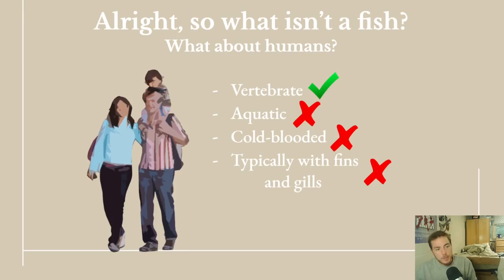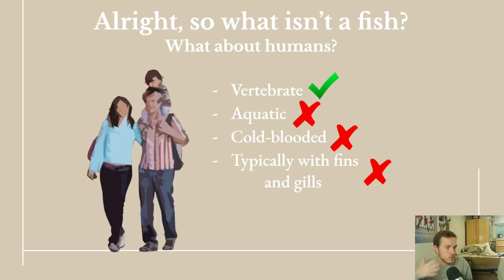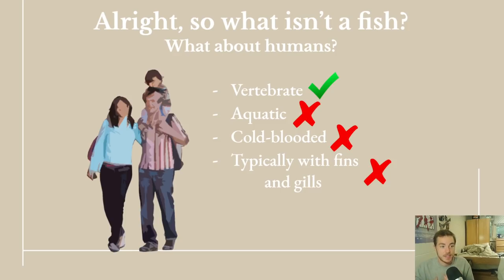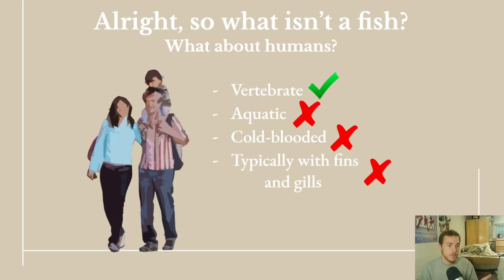Now let's talk about what isn't a fish, because you might think it should be easy to tell. Let's look at humans as an easy example. Going down the list: humans are vertebrates — true — but they're not aquatic, not cold-blooded, and don't have fins or gills. So we've checked only one of the four requirements, which by those definitions means this is not a fish, right?